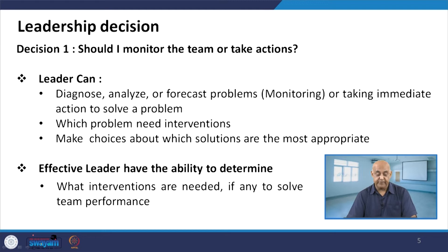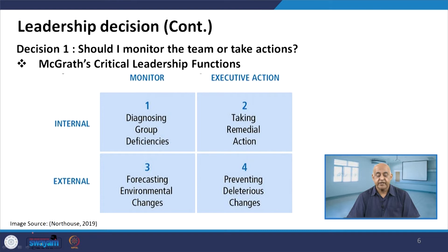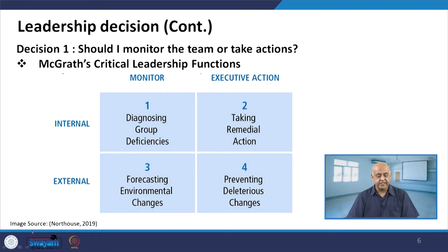An effective leader has the ability to determine what interventions are needed to solve performance issues. The critical leadership function here is diagnosing group deficiencies — what my group can do and what it cannot do. Among group members there will be different personalities. So diagnose the group deficiencies: what one can do and what one cannot do. That will be the internal dimension.